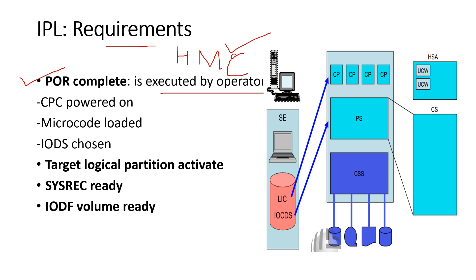We need to understand what a console is. A console is software running on one or more PCs connected to a LAN with an SE. SE is the Support Element in a mainframe. The SE is physically connected to the processor and is located in a CPC frame.